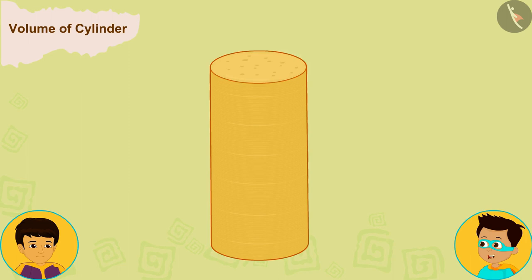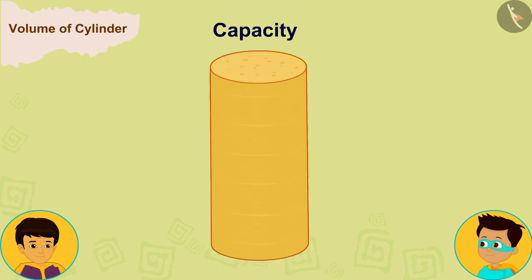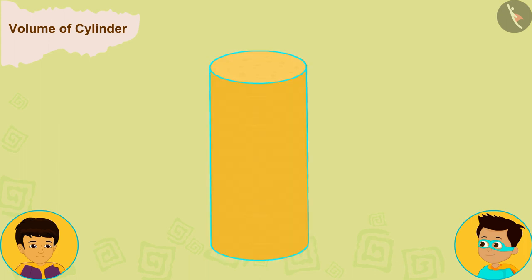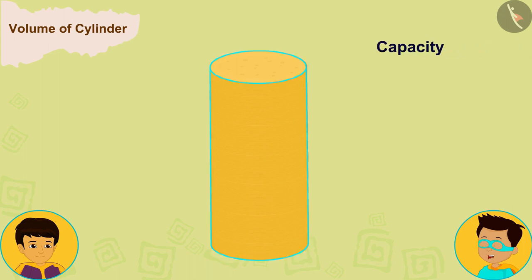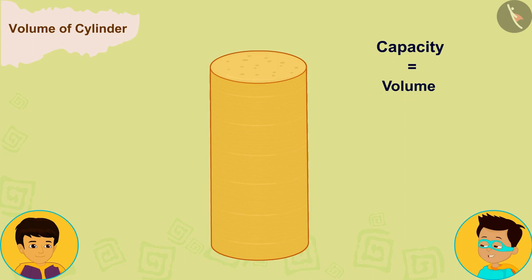Manas, notice that the space enclosed by the box is equal to its volume, and the space enclosed by all the papads combined is the capacity of the box. Because the thickness of the box is negligible, we can say that the total space inside the box is equal to its capacity, which is the same as the space enclosed by the box or its volume. In other words, the capacity of this box is equal to the volume of the box.